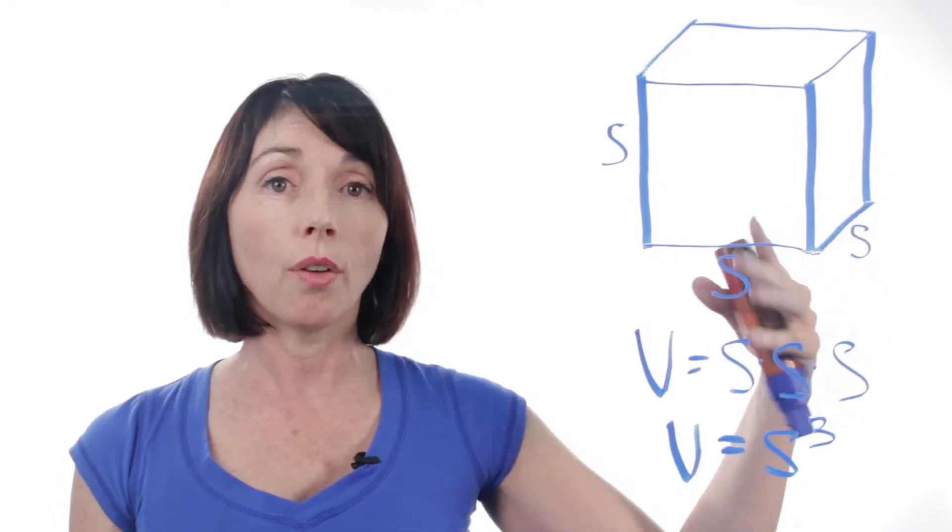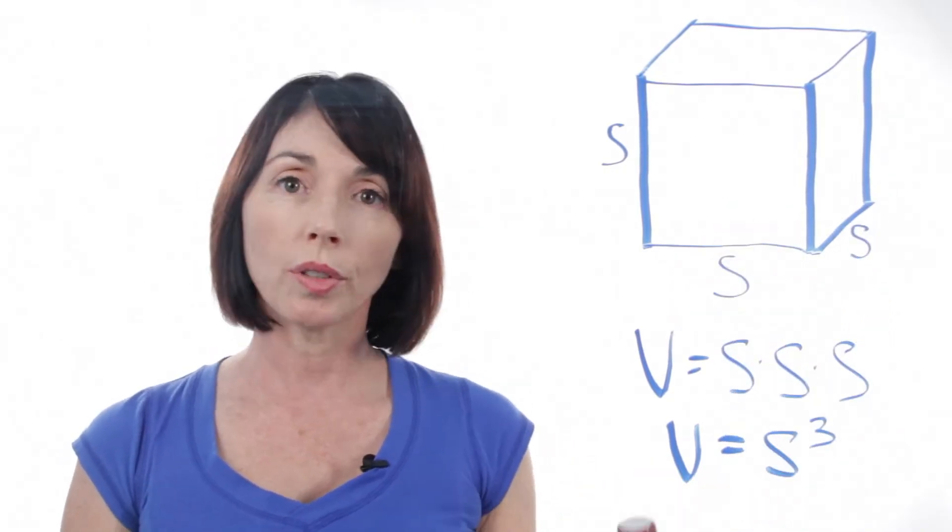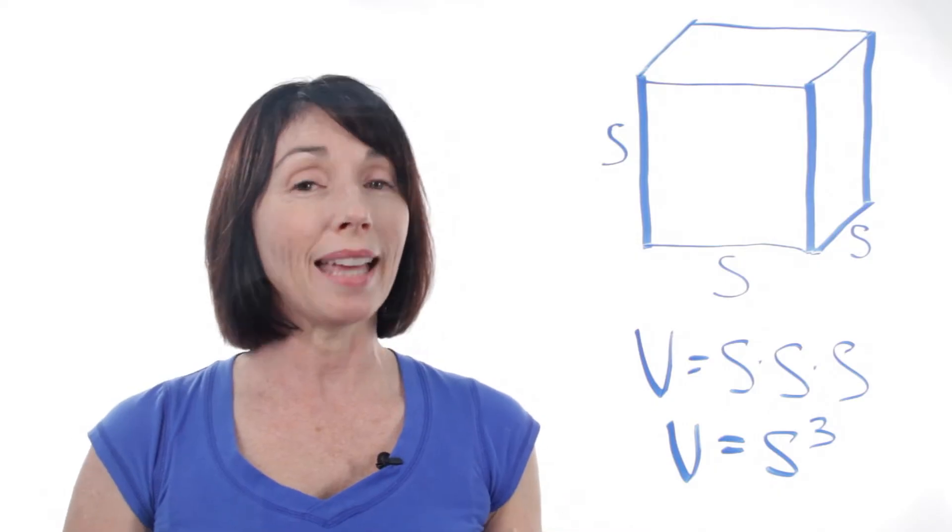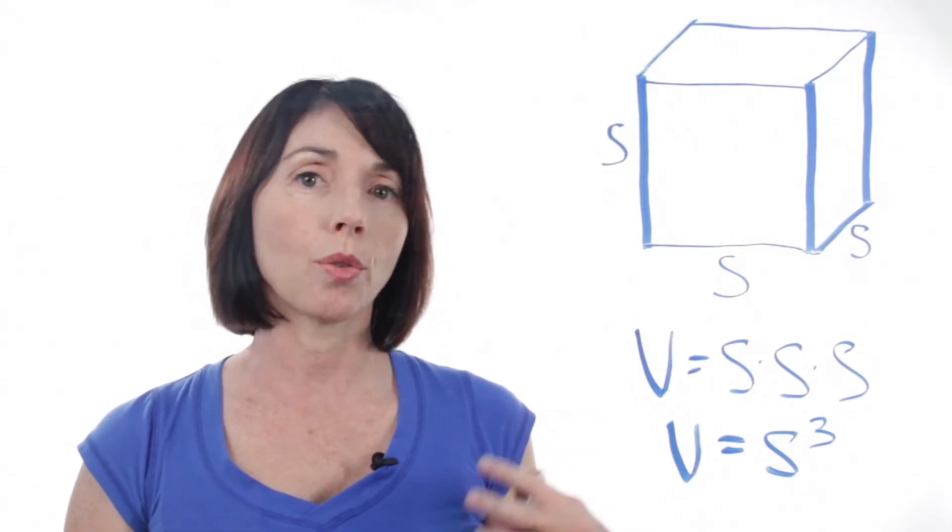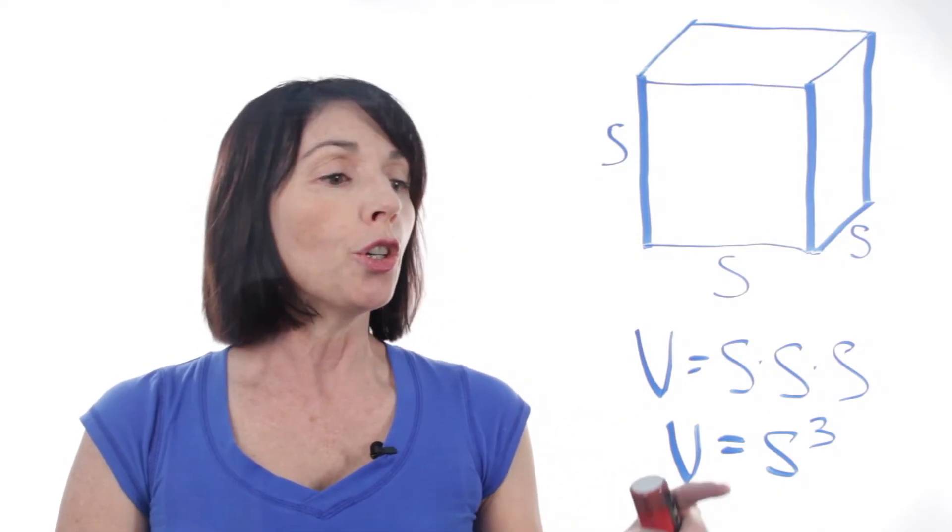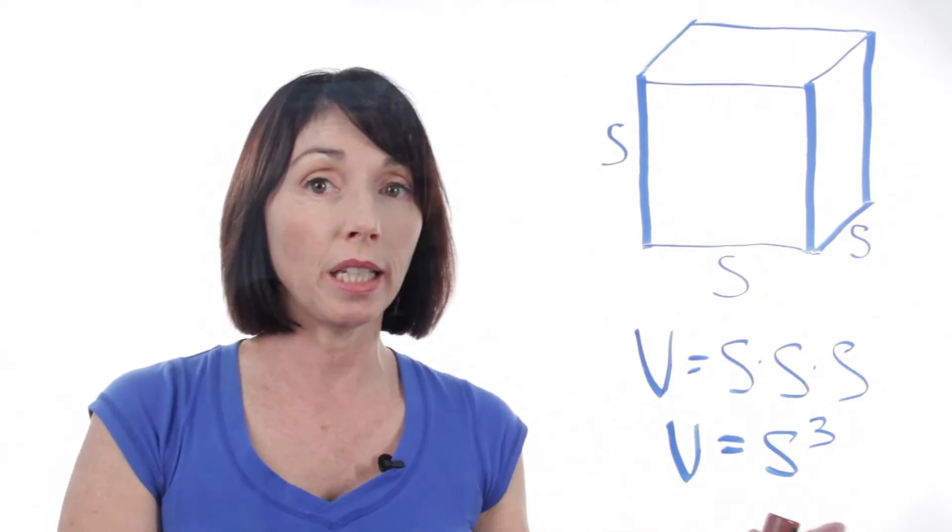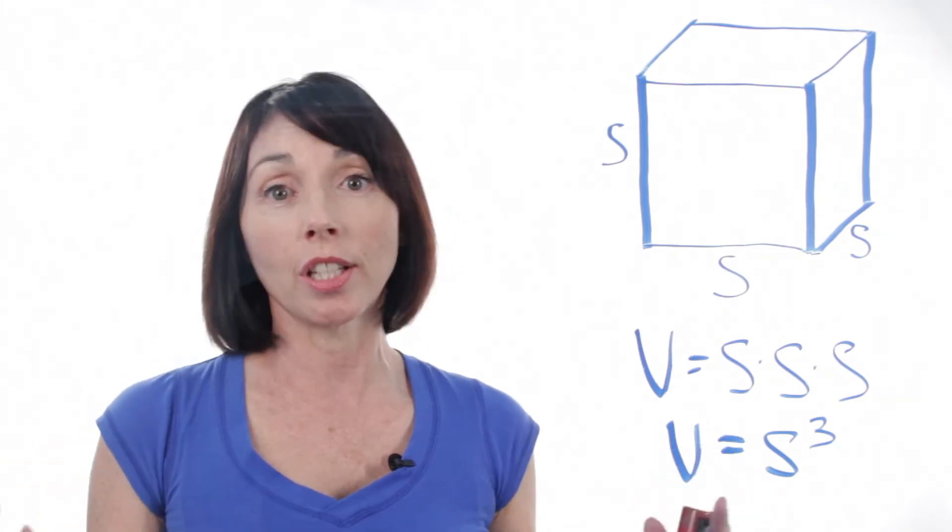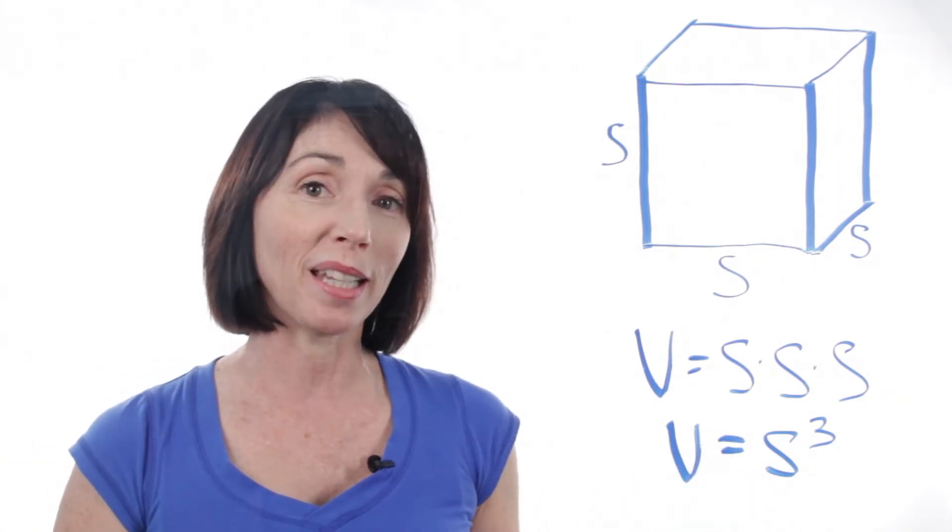So as long as you know the length of one side of the cube, you know its volume. Now don't forget, if you calculate the volume of a cube and it has units like inches or feet or anything like that, your units of volume will be cubic. So you'll have cubic inches or cubic feet, like when you buy a refrigerator and you judge the size of the refrigerator by the number of cubic inches.